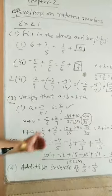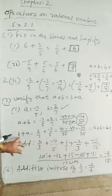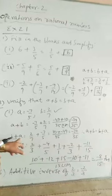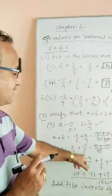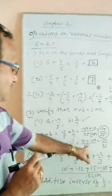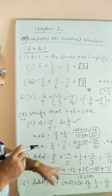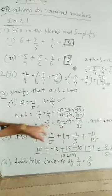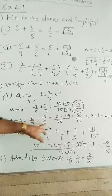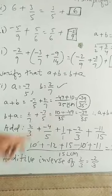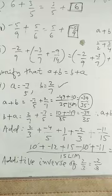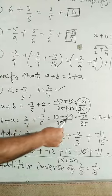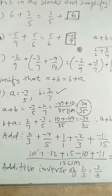Now, b plus a value. When we take the value of b, 2 by 7, value of a, minus 7 by 5, that is equal to LCM 35, 7, 5's are 5 into 2, 10, plus 5, 7's are 7 into minus 7 is minus 49, that is equal to minus 39 by 35.